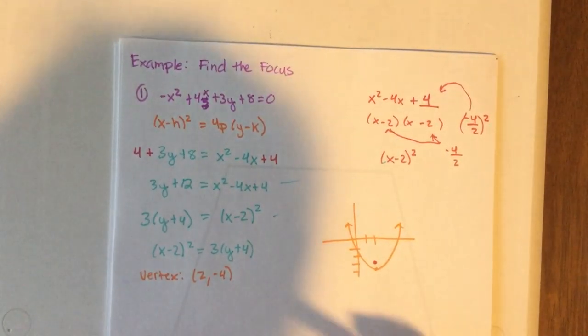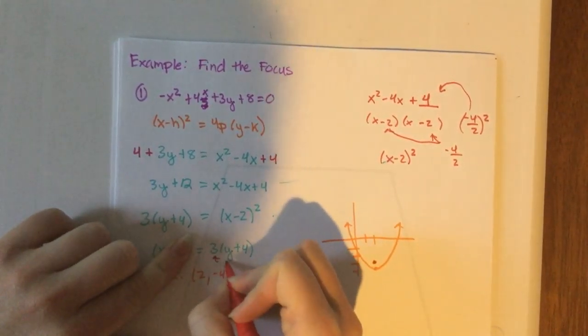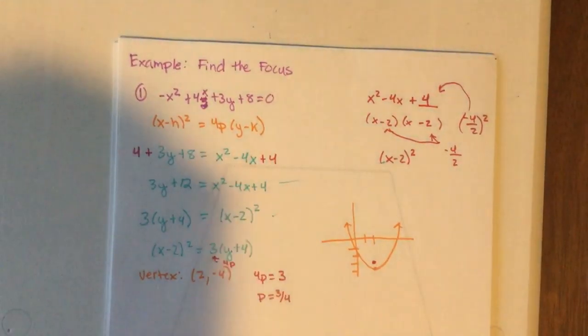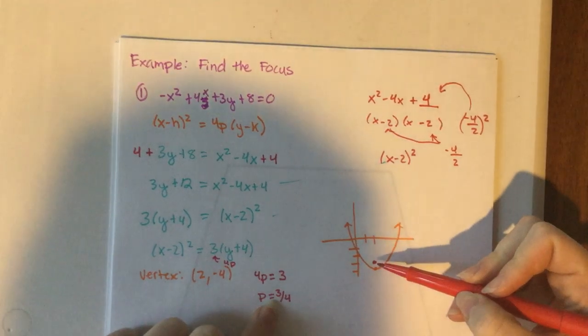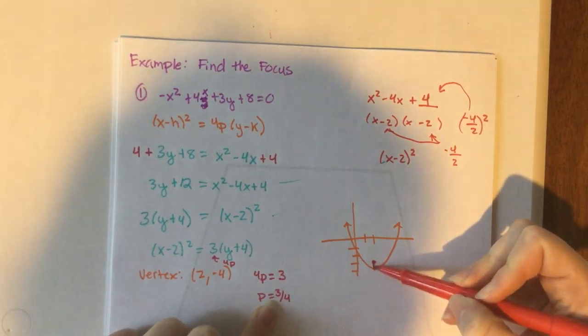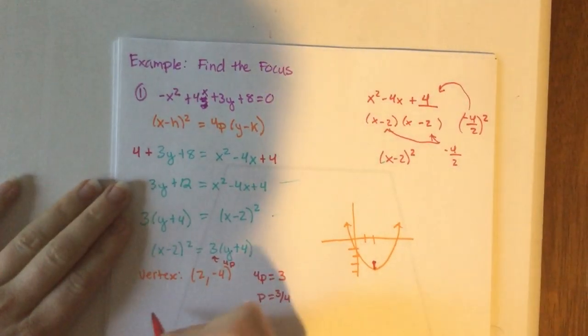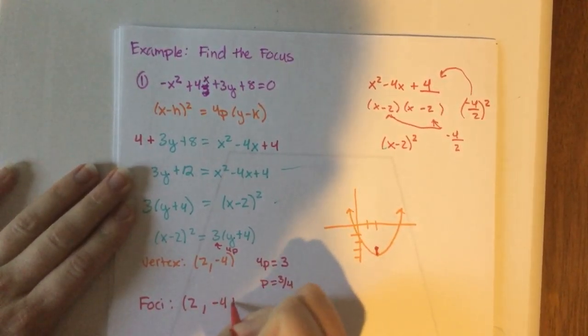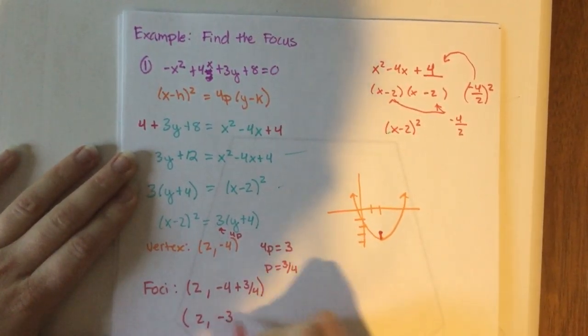Well, to know what that point is, I have to find my p value. Right now I have 4p equals 3. That's the 4p part. So I know my p is equal to 3 fourths. And this is why you want to draw the picture or visualize it in your head, so that way you know what value am I going to add or subtract potentially 3 fourths to. So right now I'm looking at the foci, and it's going to go up from the vertex. So if I'm going to go up, that's going to go to the y. And since I'm going up, it's going to be plus. So I'm going to take my vertex, and my foci, or my focus, is going to be 2, negative 4 plus 3 fourths, which we know will come out to 2, negative 3.25.